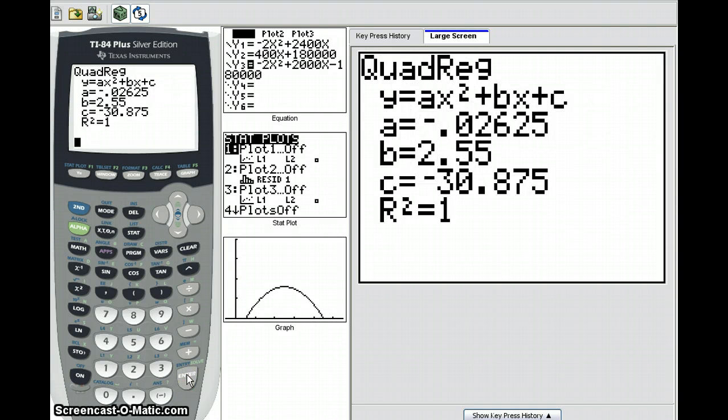The calculator performs the quadratic regression, and we'll see that the result is gas mileage equals negative 0.02625 times the speed squared plus 2.55 times the speed minus 30.875. The R squared equals 1 indicates that this curve is a perfect fit for our data points.